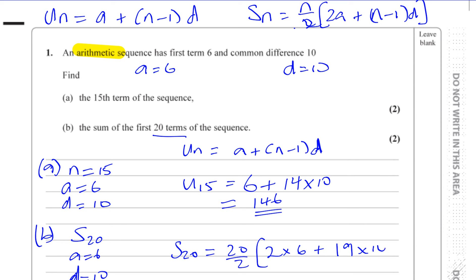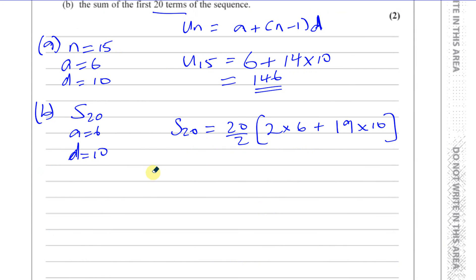If we simplify, when we work out what this is, we're going to have the sum of the first 20 terms is going to be 10 times 12 plus 190, so that's going to give us 10 times 202.